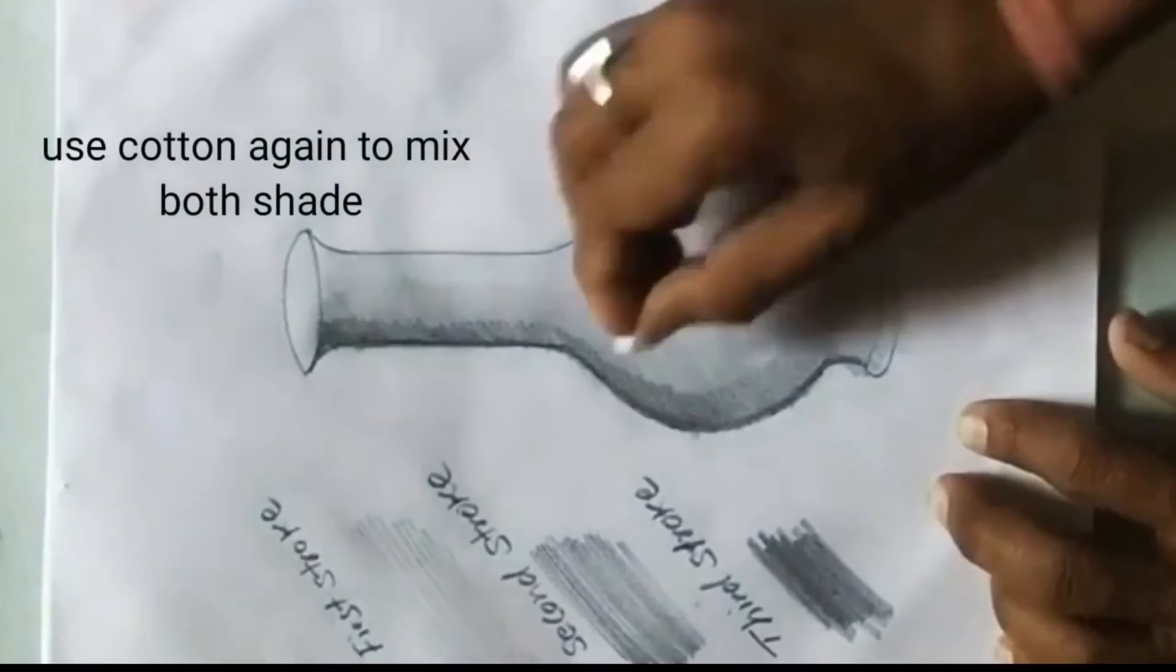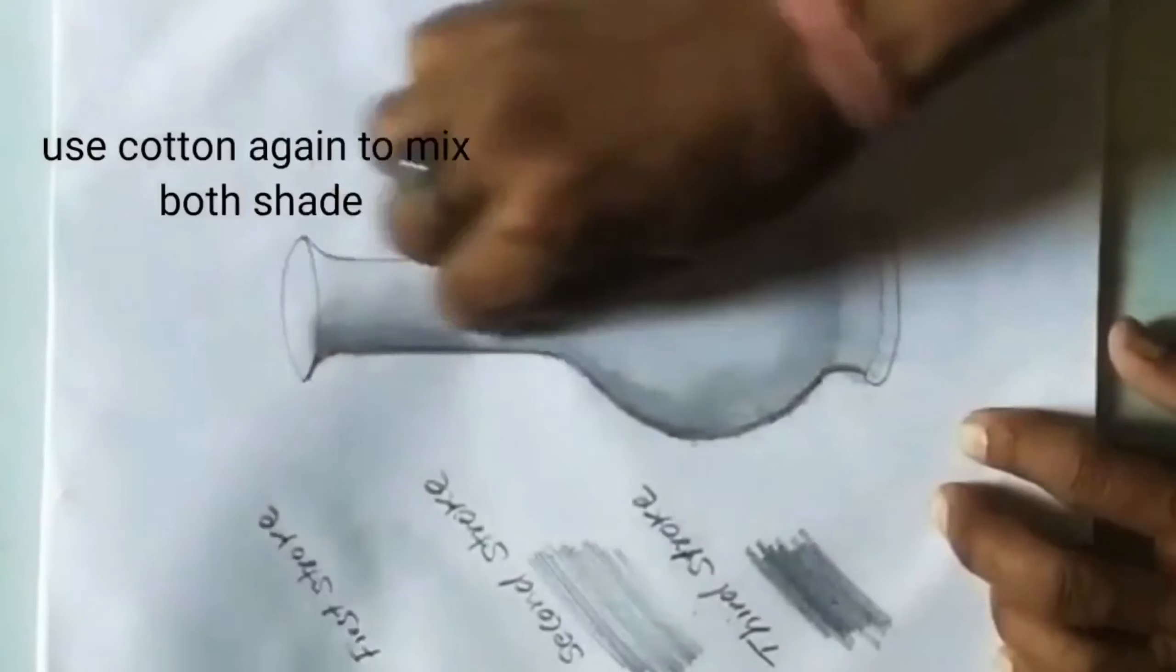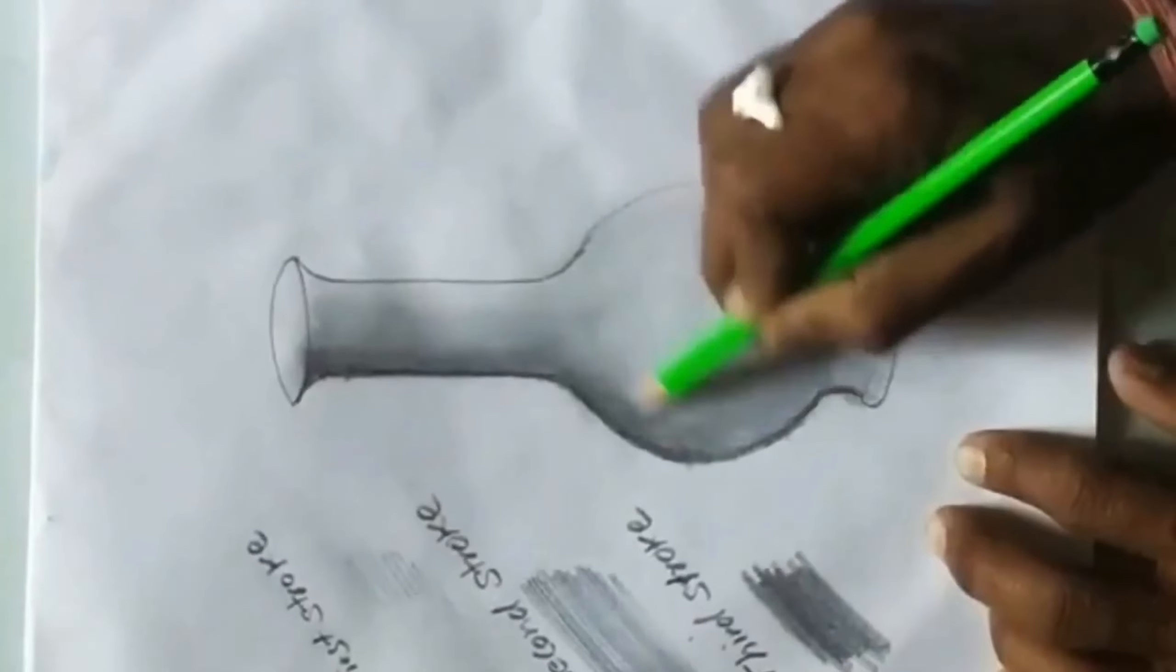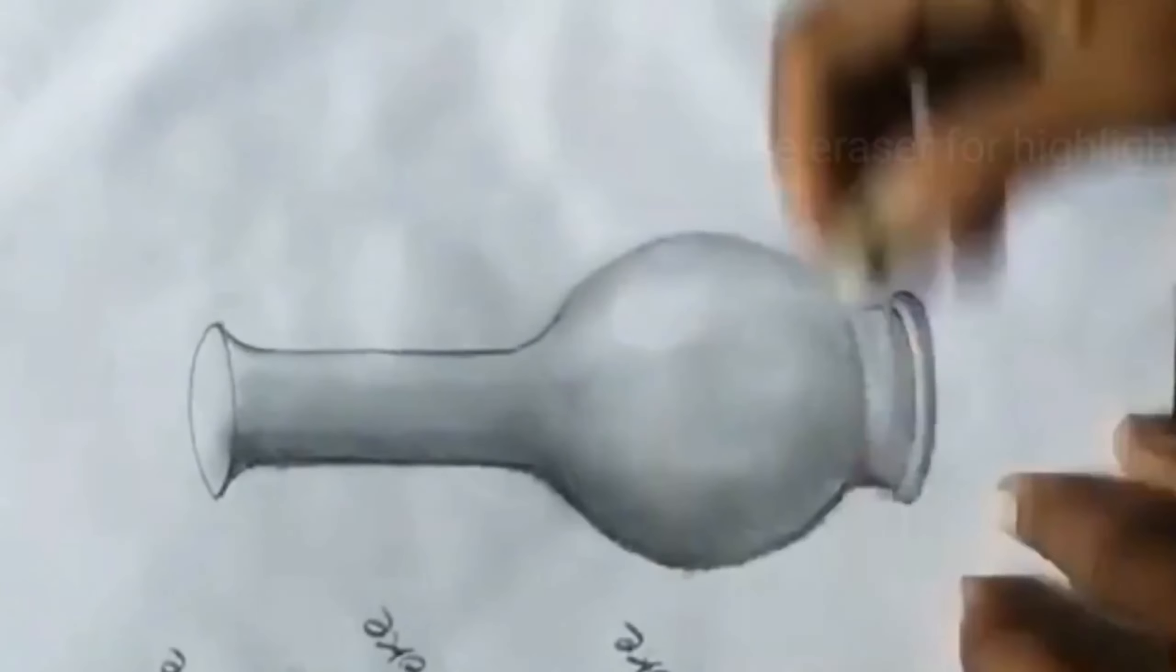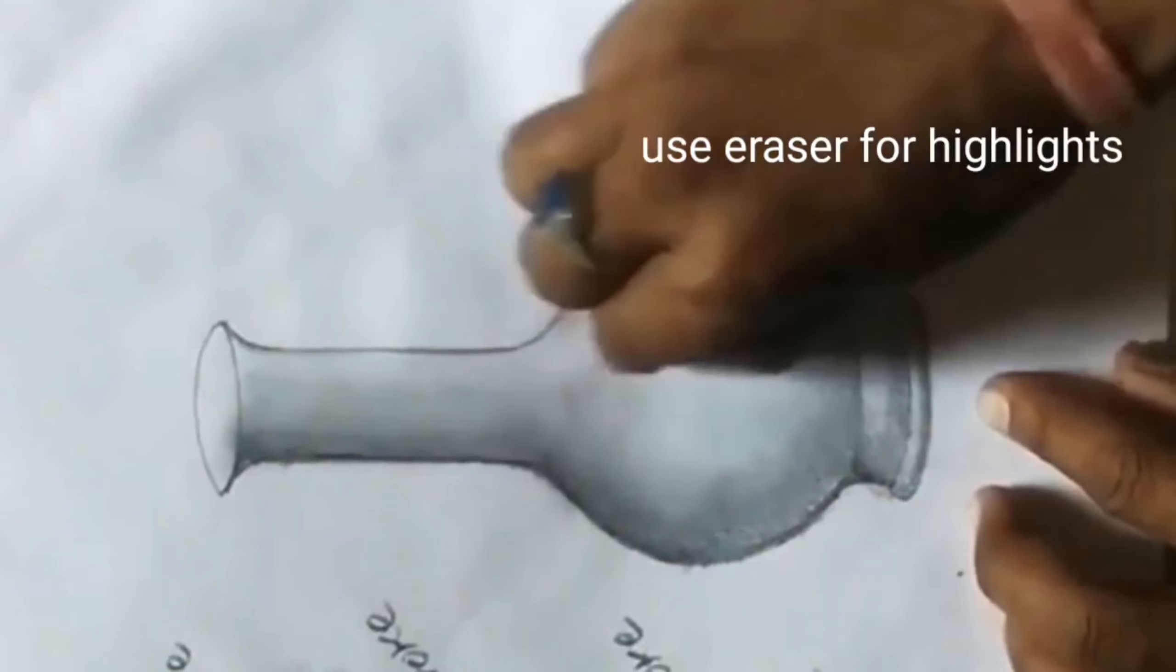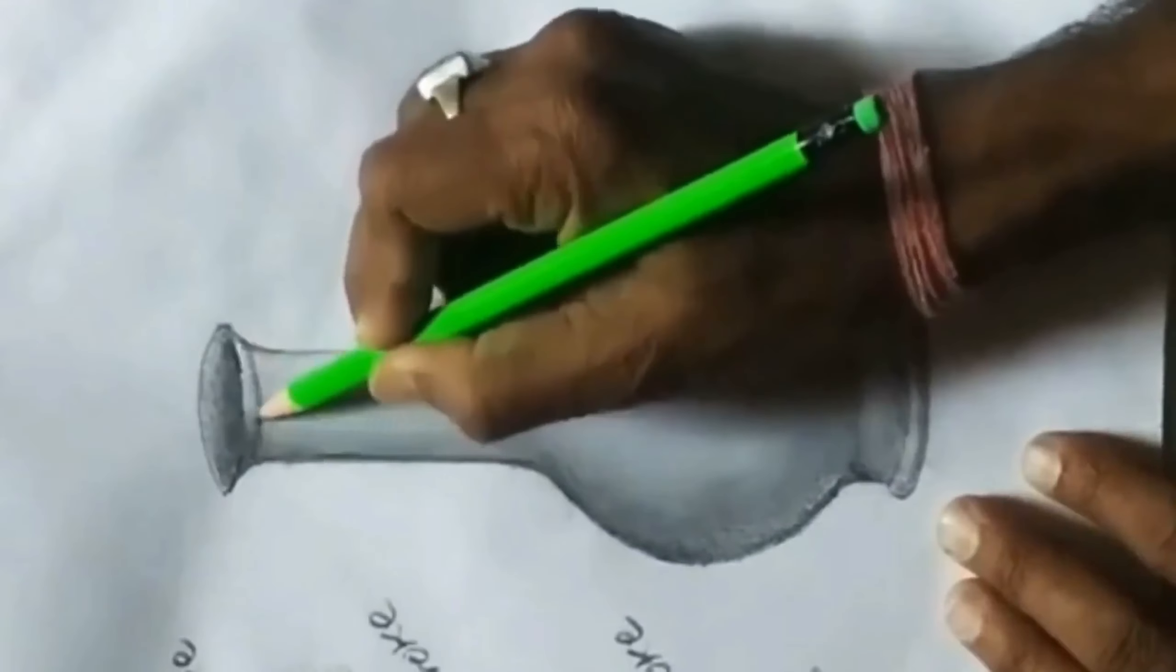Now again use cotton for mixing both shades. Use eraser for highlights. Small detailing makes perfection.